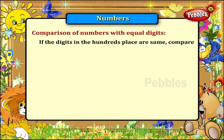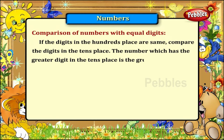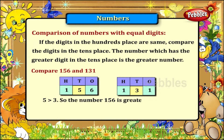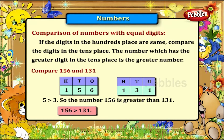If the digits in the hundreds place are the same, compare the digits in the tens place. The number which has the greater digit in the tens place is the greater number. Now let us compare 156 and 131. The digits in the hundreds place are the same, so we compare the tens place. 5 is greater than 3, so the number 156 is greater than 131. We write 156 greater than 131. We can also say 131 less than 156.